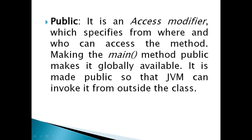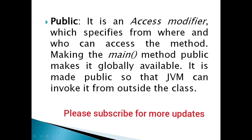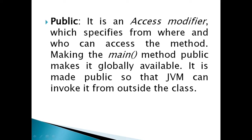Public is an access modifier which specifies from where and who can access the method. Making the main method public makes it globally available. It is made public so that JVM can invoke it from outside the class.